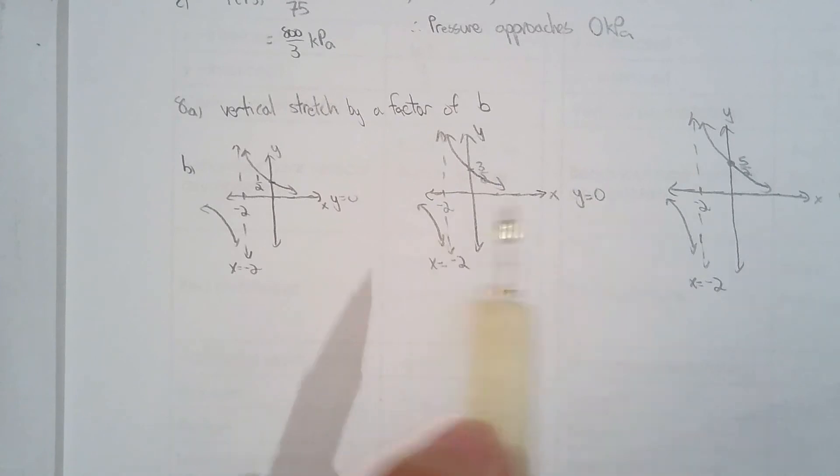It's just like 3 over x plus 2 is taking 1 over x plus 2 and vertically stretching it by a factor of 3. And 5 over x plus 2 is 1 over x plus 2 with a vertical stretch by a factor of 5. So they should look vertically stretched, the second and third graph compared to the first graph.